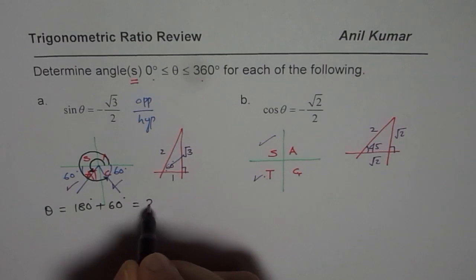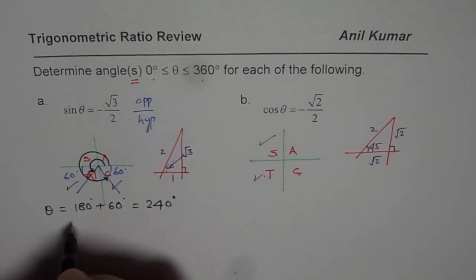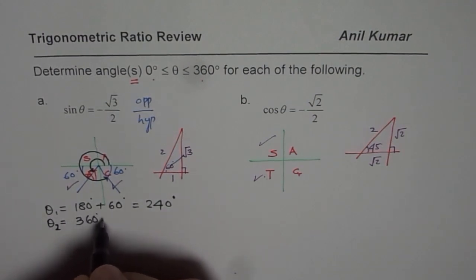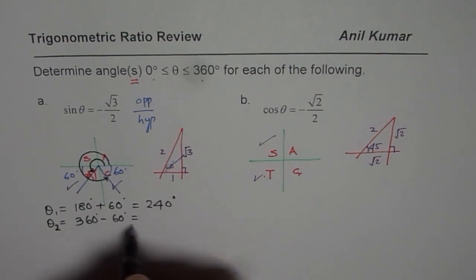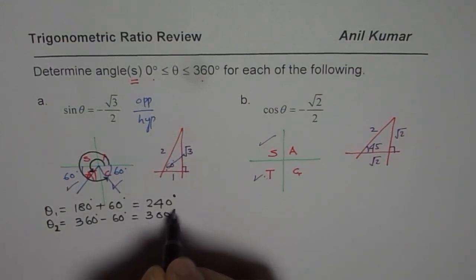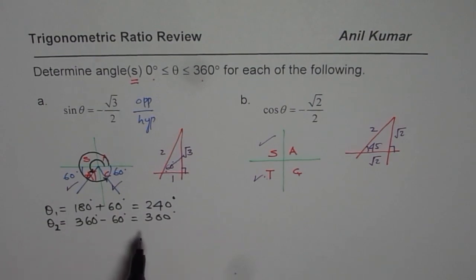And the other one is θ equals—we have two angles—360 degrees minus 60 degrees. Principal angle will be 300 degrees. So these are the two possible answers for part A.